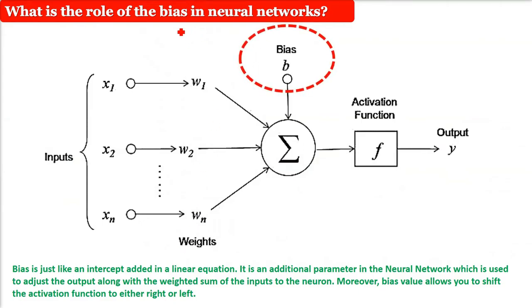What is a bias and what is the role of bias in neural networks? Bias is just like an intercept added to a linear equation, y equals mx plus c.